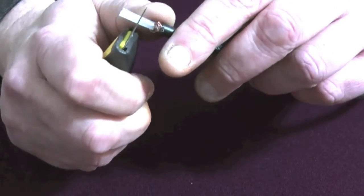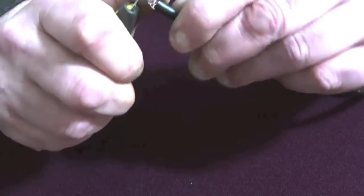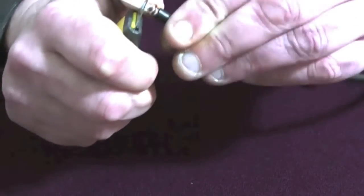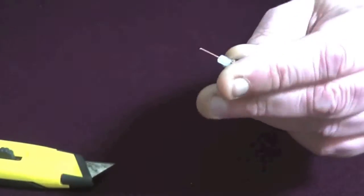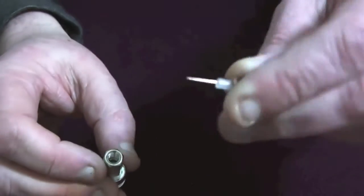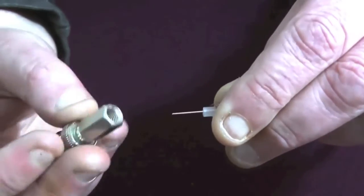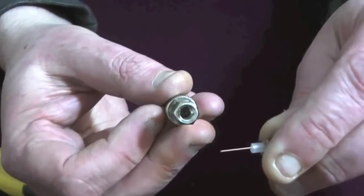Then, leaving about 5mm, I remove the insulator, leaving the right amount of inner conductor to go into the socket of the BNC.